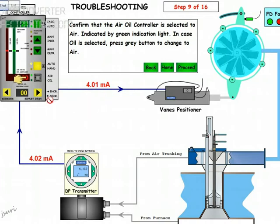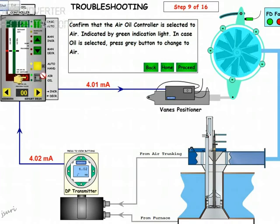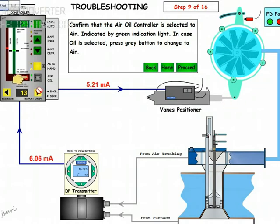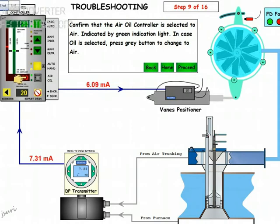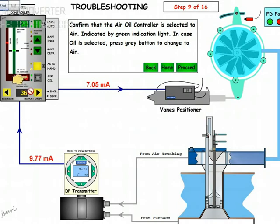Now we are going to increase the milliamps. You can see I am going to increase it. First make sure it is in the air position selected and change to hand mode so that you can operate — it was in auto. Then increase. When you increase the amps, you can see this position also moves. You can see the milliamps increasing. The main positioner is being pushed.